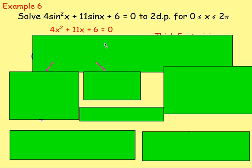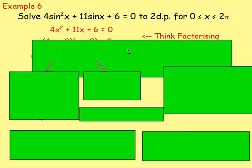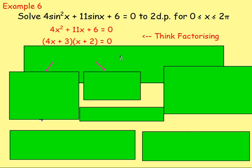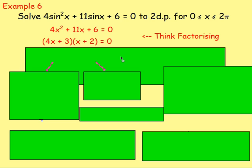It looks like a quadratic — x squared term, x term, then a number. If you imagine it as 4x² plus 11x plus 6 equals zero, we're replacing sine x with x. To solve that, you would factorize. Factorizing gives you (4x + 3)(x + 2) equals zero. Now remember the question has 4sin²x, so replace x back with sine x.